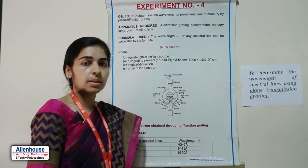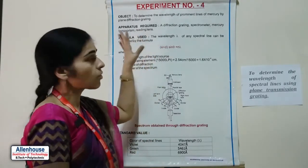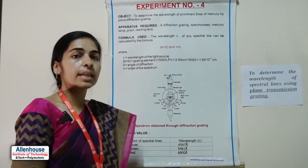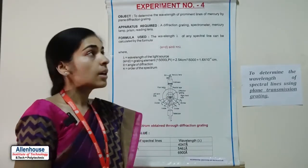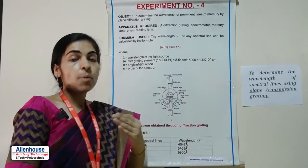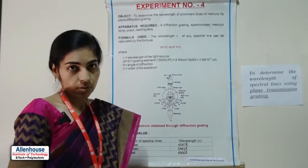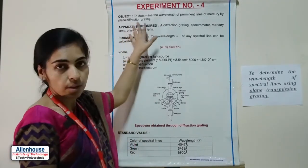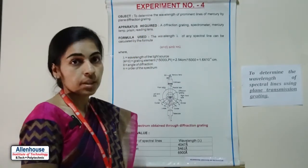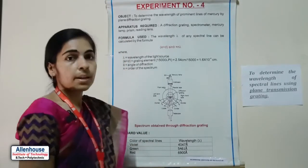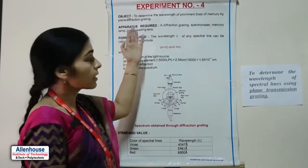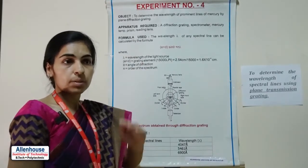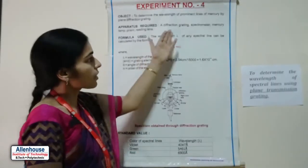A diffraction grating is a combination of a large number of slits — n number of slits. You can understand it from the 12th standard concept of single slit diffraction or double slit diffraction. A grating is square-shaped and has a large number of slits. The main apparatus we use for the diffraction grating experiment is the spectrometer.